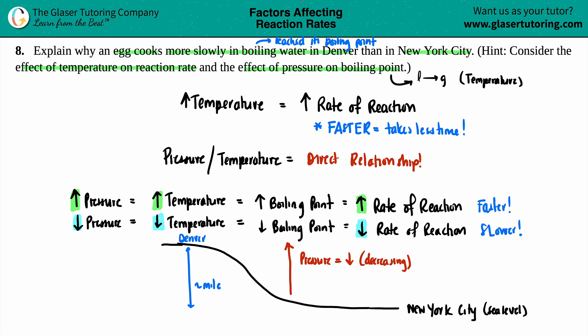So we know that at the top, Denver has way less pressure, atmospheric pressure. And if it's a low pressure, we know that that temperature, the boiling point is going to be lower. And if you don't have the temperature that New York City would have, as far as boiling point, the rate of reaction is going to be way slower.